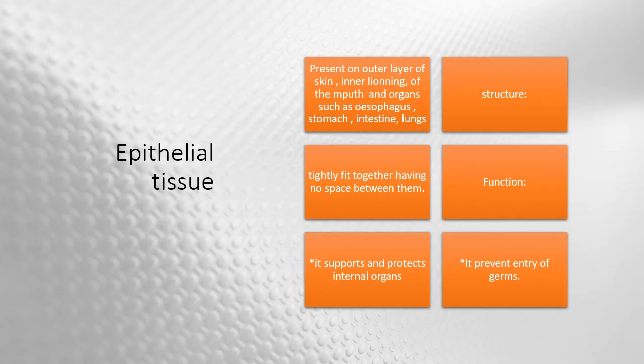First is epithelial tissue. It is a thin protective layer of cells which covers the external body as well as the inner linings of internal organs — for example, the layer of skin, inner lining of mouth, and organs such as esophagus, stomach, intestine, and lungs. The cells of epithelial tissues are tightly fit together with no space between them. Their function is to support and protect internal organs and also to prevent entry of germs.